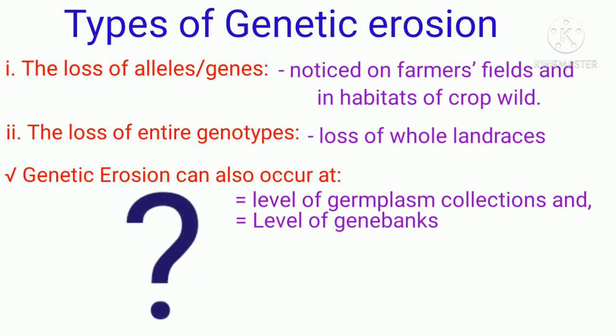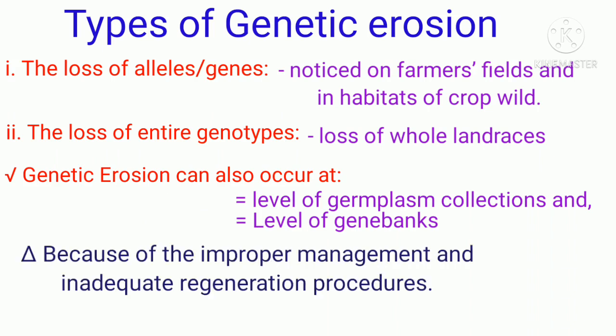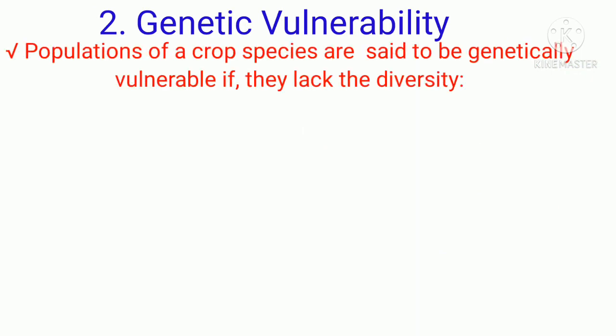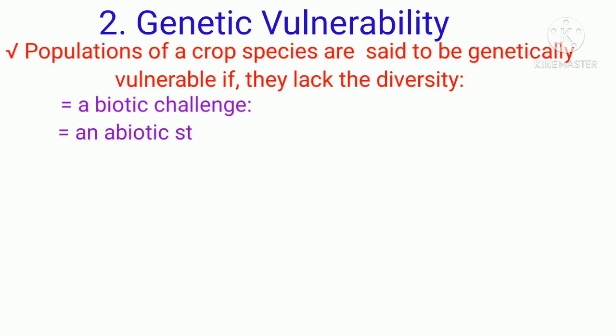Why does genetic erosion happen at the level of germplasm collections or gene banks? It is due to improper management and inadequate regeneration procedures. A population of a crop species is said to be genetically vulnerable if it lacks the diversity necessary to adapt to a biotic challenge or to an abiotic stress.